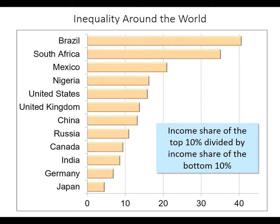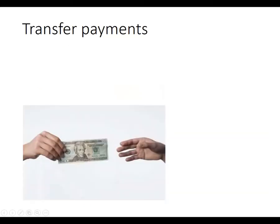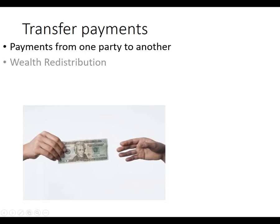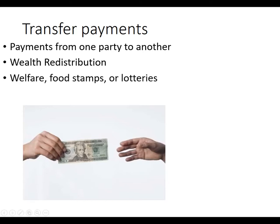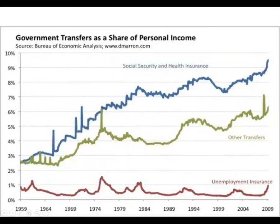Income inequality around the world — this data is from about 2009. Some countries are more unequal than we are, others are more equal. One thing we could do is just do transfer payments: take money from a wealthy group and give it to somebody else, often called wealth redistribution. In the United States this takes the form of welfare, the earned income tax credit, food stamps — even a lottery is a transfer payment. They do not create new wealth but do create more equality. The number of transfers has been increasing over the last couple decades.